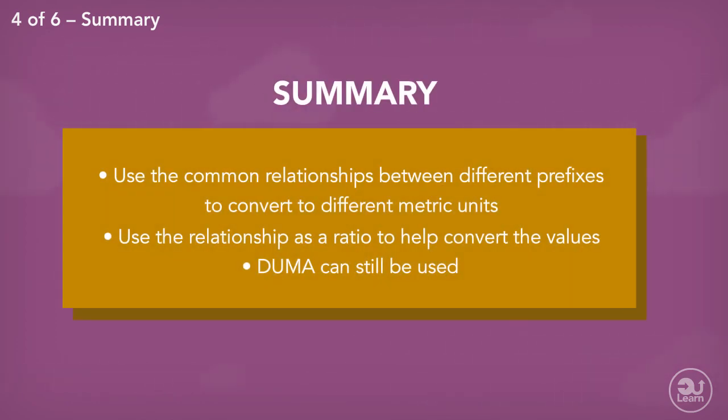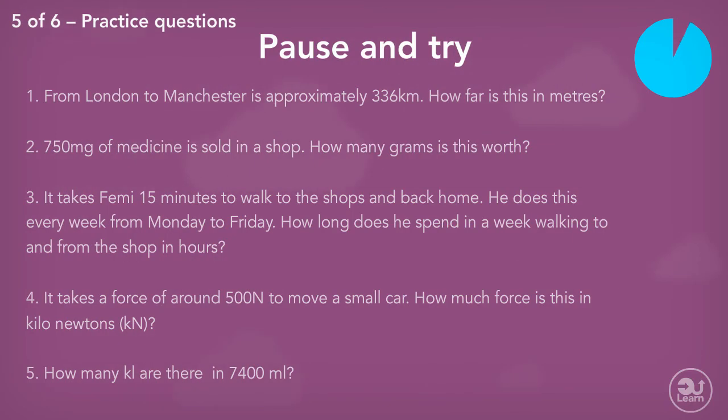So to summarize, when converting between metric units, use the five common ratios that represent the relationship between the base units and the different prefixes. Then apply our technique for finding values using a ratio. Have a go at these questions.